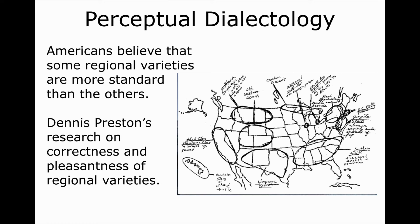Maryland and the national capital Washington D.C. received the highest scores from the Southerners. Interestingly, when they were asked about the pleasantness of the states' varieties, the residents of Alabama demonstrated that they find their own accent the most pleasant one, and the farther North a state is, the less pleasant the accent is for the Alabamians.